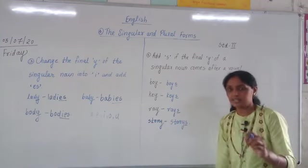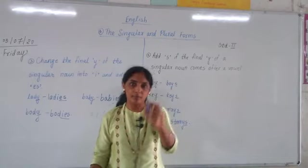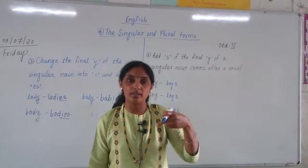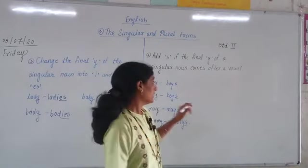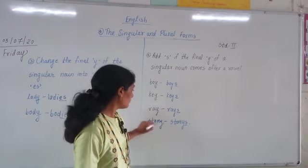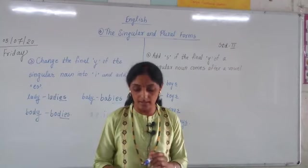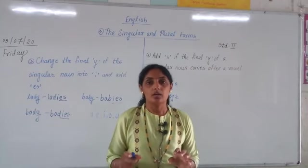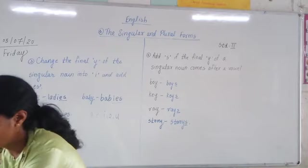So keep these 5 vowels in mind. If the word is ending with 'Y' and the letter before 'Y' is one of the 5 vowels, then we have to add normal 'S'. Now look here — there is a question in your book.